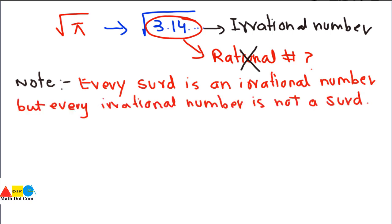From this we can state an important note: every surd is an irrational number, but every irrational number is not a surd. This is clear from the above example — π (3.14...) is an irrational number but it is not a surd. Keep this fact in mind.